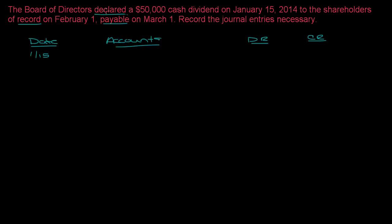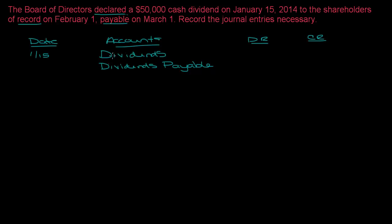On the declaration date this is when the dividend is enforceable — this is when it becomes payable and we have a liability. The accounts we're going to use: the first account is Dividends, and then Dividends Payable. Some textbooks say to use Retained Earnings instead of Dividends, but Dividends makes more sense because we don't roll anything into Retained Earnings until we do the closing entry at the end of the year. So I always use the Dividends account — but if your textbook tells you to use Retained Earnings, use Retained Earnings.